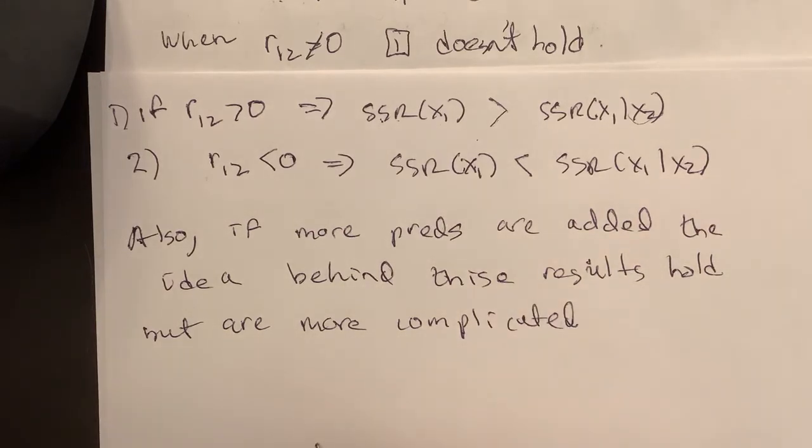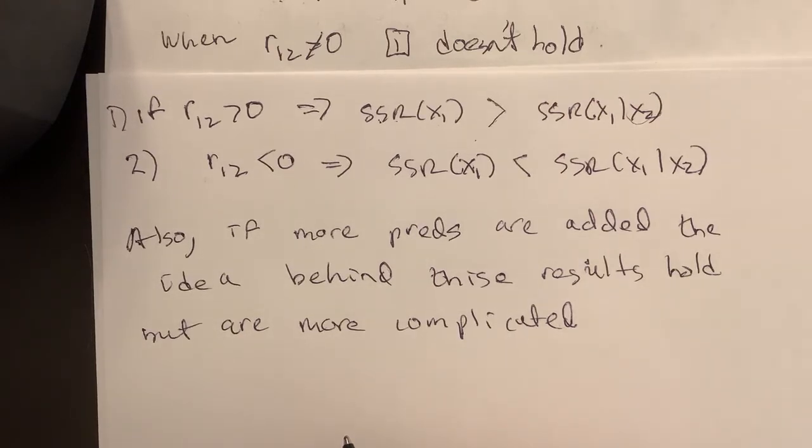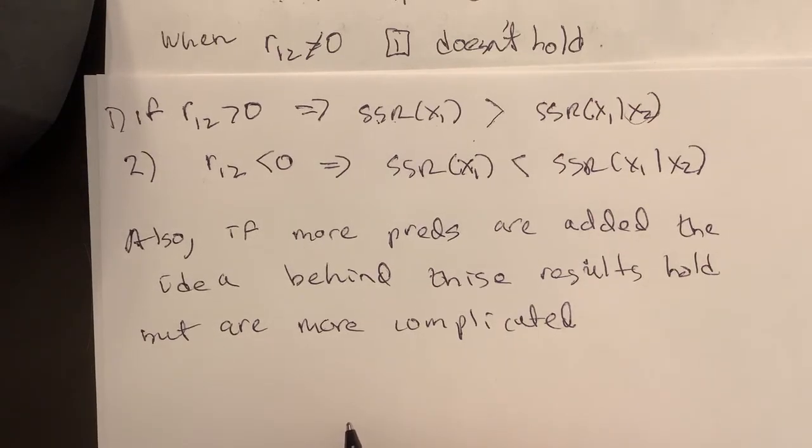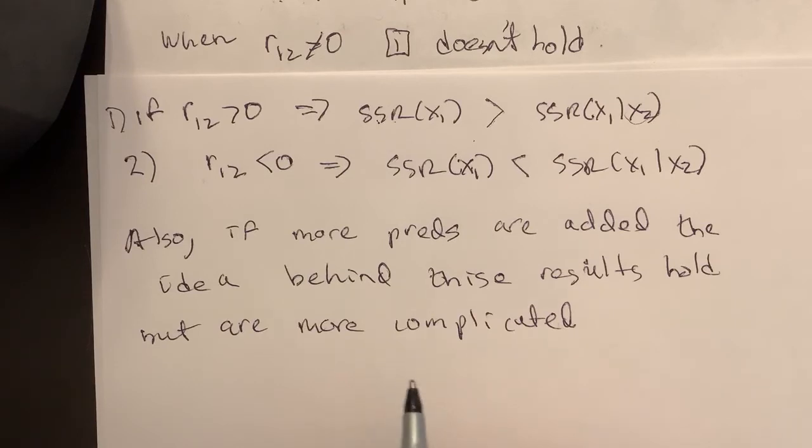Because it's possible for x1 to be uncorrelated with x2 and x3 individually, but when x2 and x3 are taken together, x1 is correlated with those two together. We won't get into this, but the point is, by looking at the separate correlations of each of these...